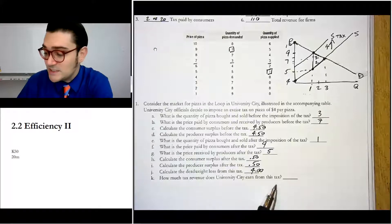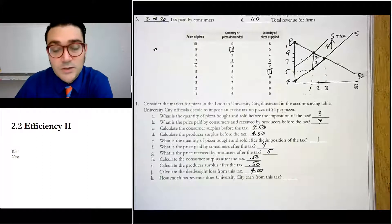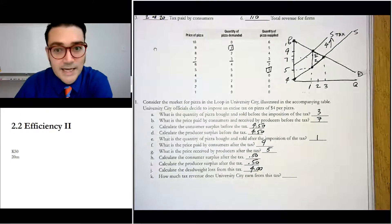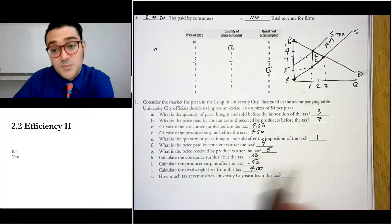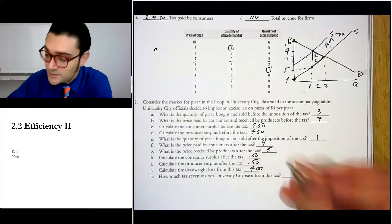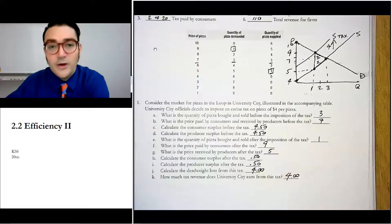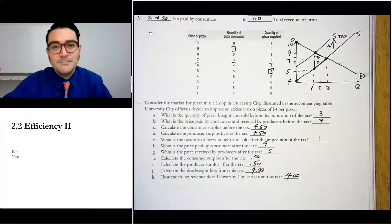How much tax revenue does University City earn from the tax? Well, how many pizzas are bought and sold under the tax? Just one. Remember it says right here, one pizza and it's per unit. So one times four dollars is four dollars. Alright, hopefully this helped you. I'll see you next time. Bye.